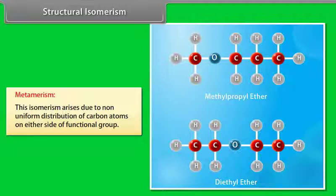Metamerism arises due to non-uniform distribution of carbon atoms on either side of a functional group — for example, methylpropyl ether and diethyl ether.